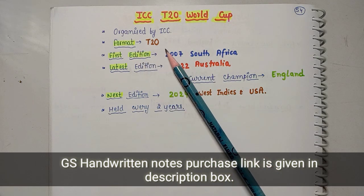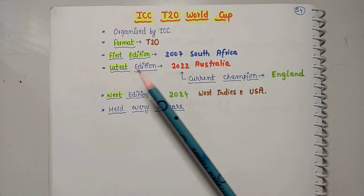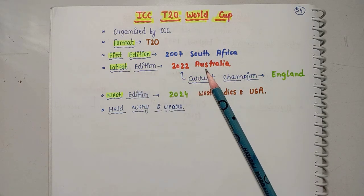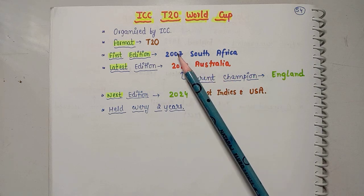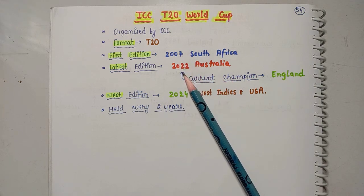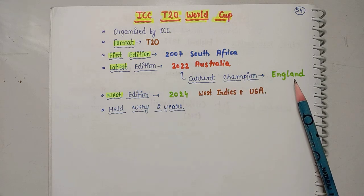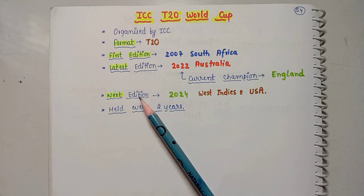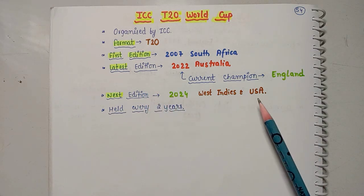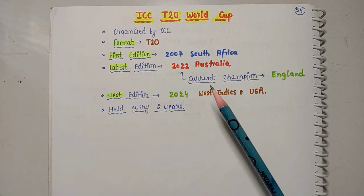The format is T20. The first edition was held in 2007 in South Africa, and the latest edition was held in 2024 in Australia. The next edition will be in West Indies and USA in 2024. It is held every two years.